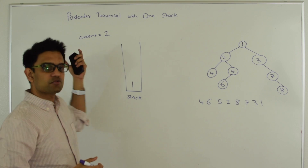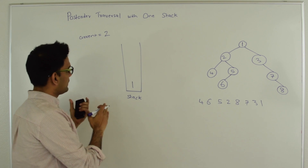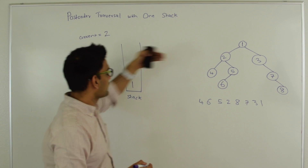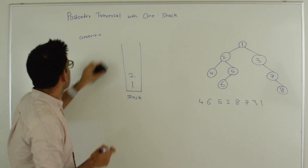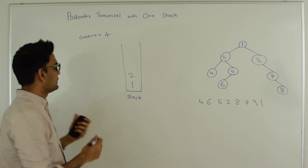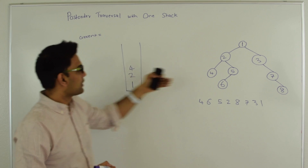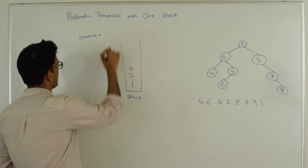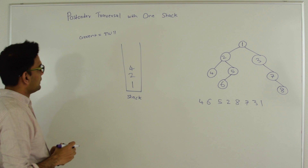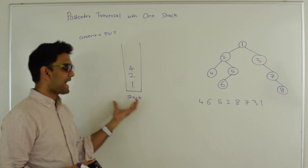Then we check if 2 is null. Again 2 is not null, which means we push that into the stack and set current equal to current's left, which is 4. So current becomes 4. Again current is not null, so we push that into the stack and set current equal to current's left, which now becomes null because 4's left is null. So now current is null and stack is not empty.